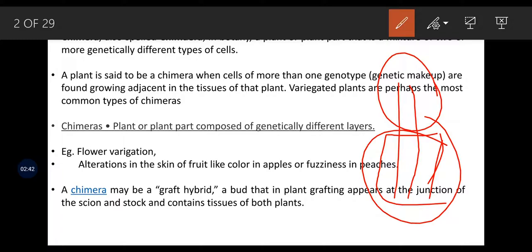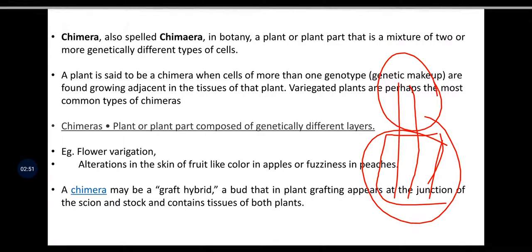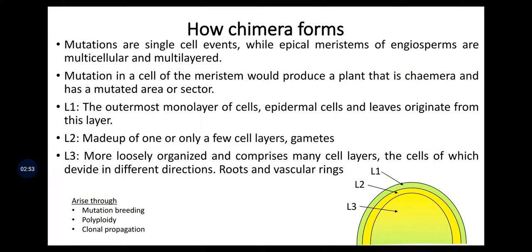Chimera is also called in different forms like Chimeric Vector or Chimera Condition. How does Chimera form? There are three major factors for the formation of Chimera: one is through mutation breeding, polyploid breeding, or clonal propagation. This may be an accidental phenomenon as well as an induced one.